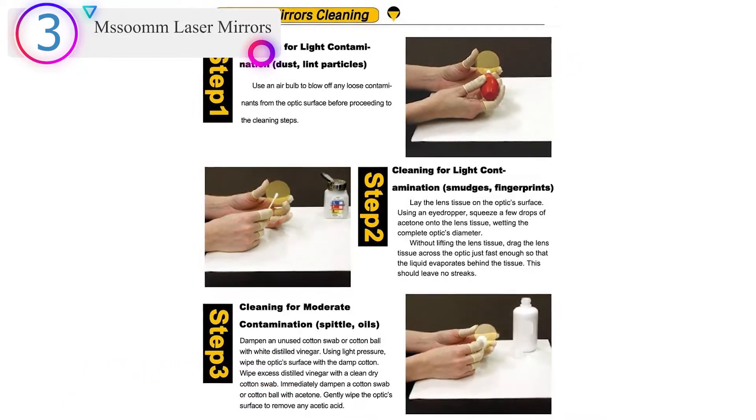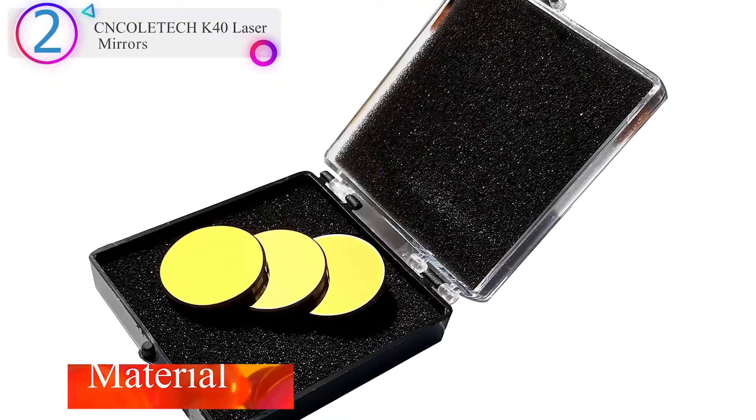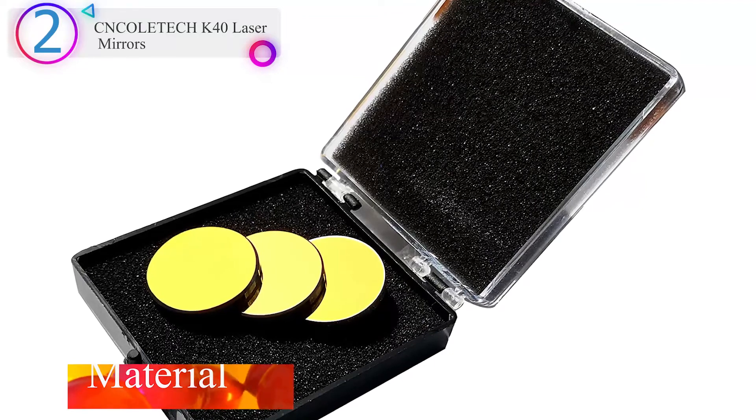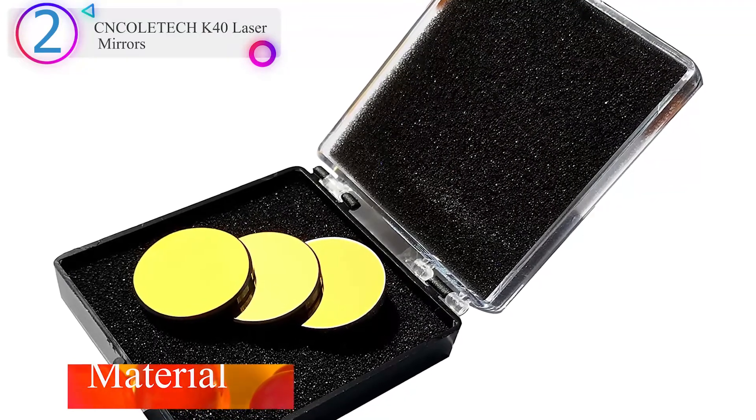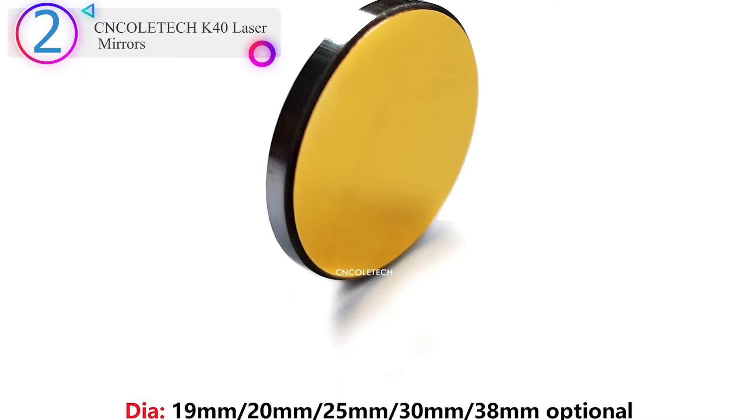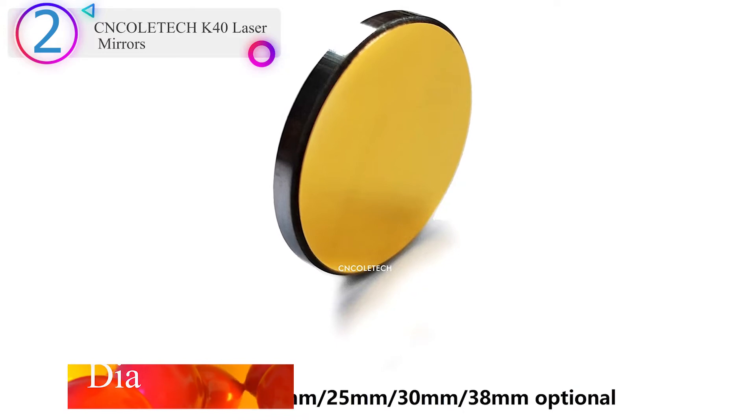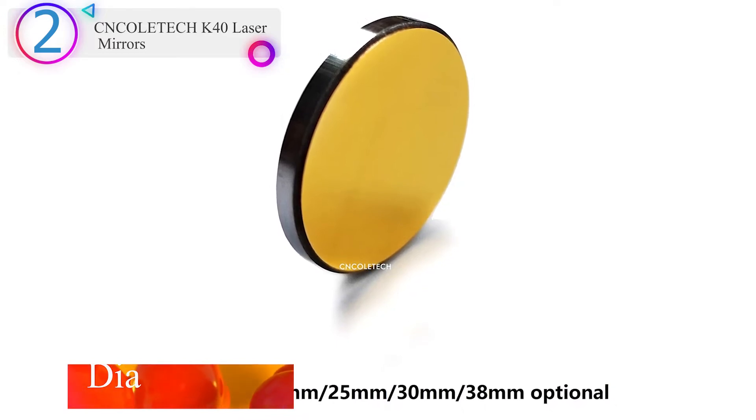In our list, the number 2 product name is Concoltec K40 Laser Mirrors. Material: C Coated Golden. Dia: 19 mm/20 mm/25 mm/30 mm/38 mm (optional). Thickness: 3 mm.